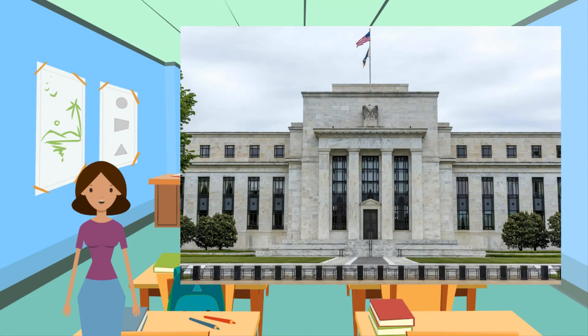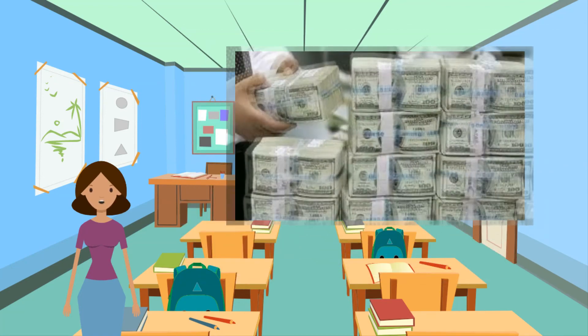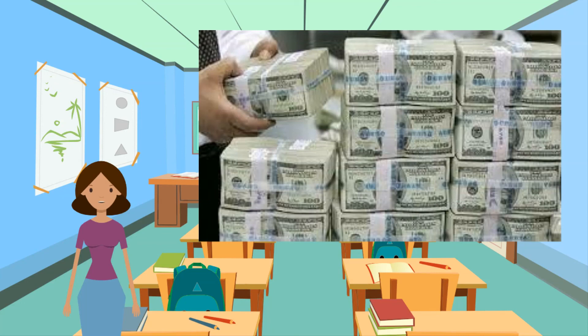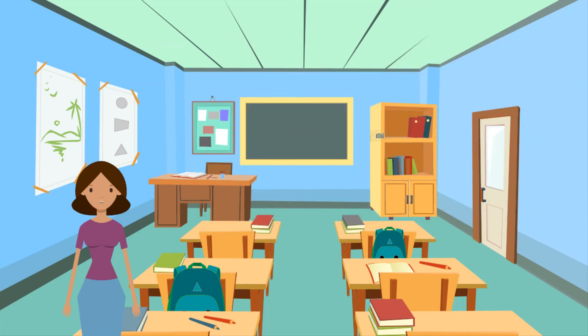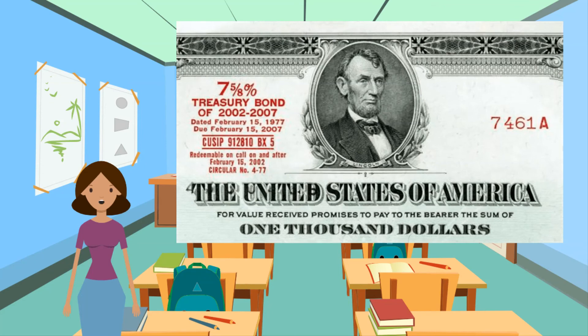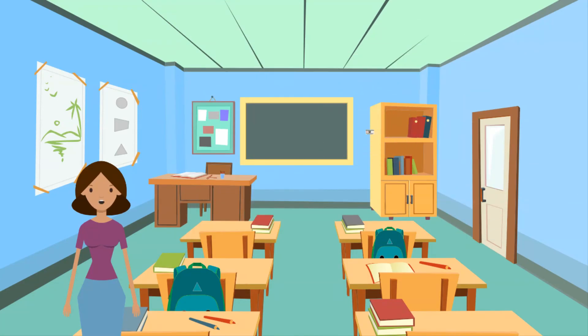A central bank can influence the exchange rate with direct forex interventions — buying or selling domestic currency in exchange for foreign currency. To sell foreign currency and buy domestic currency, the central bank must have a stockpile of foreign currency reserves. A central bank can also influence the exchange rate with indirect open market operations — the buying or selling of domestic treasury bonds. These transactions work through money supply changes and their effect on interest rates. Purchases or sales of foreign currency on the forex will raise or lower the domestic money supply and cause a secondary indirect effect upon the exchange rate.